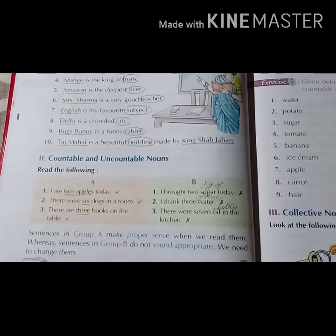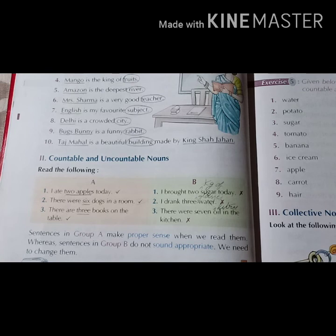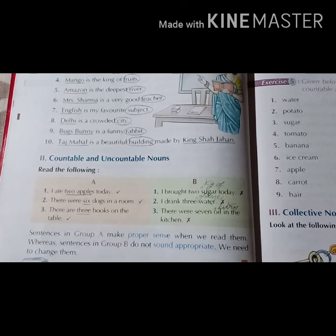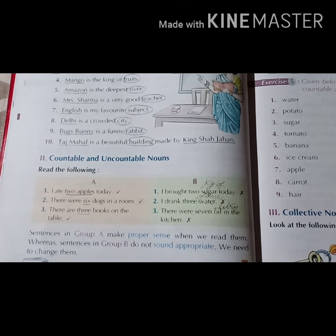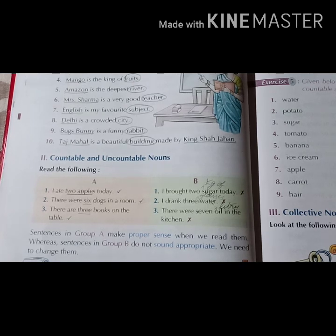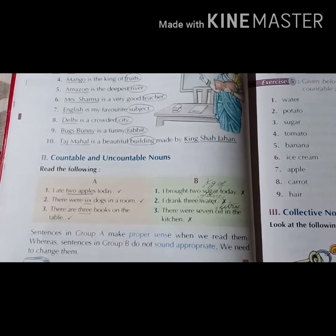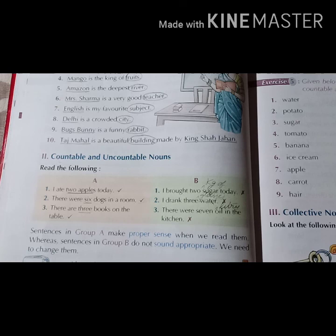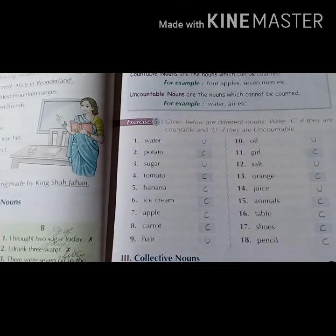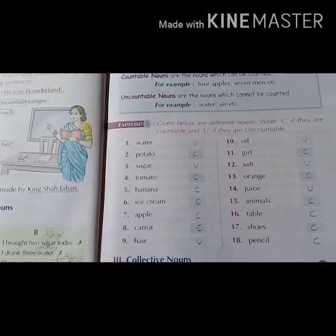Next type is countable and uncountable nouns. Countable nouns are the nouns which can be counted and uncountable nouns are the nouns which cannot be counted. So counting nouns are countable.